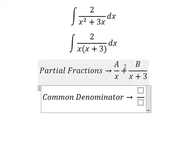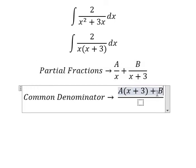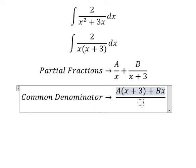Next we do common denominator. You have A multiplied by x plus 3 plus B multiplied by x.